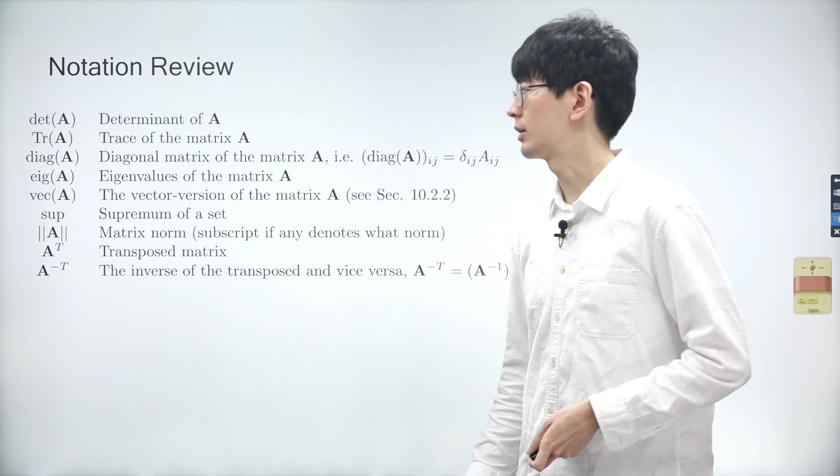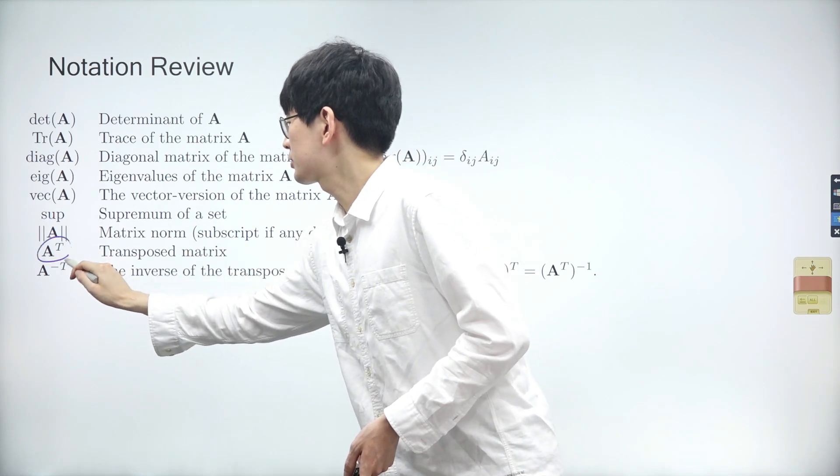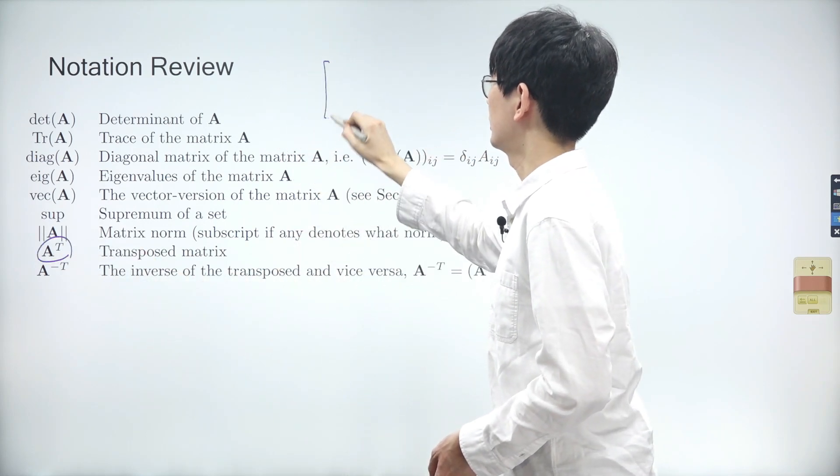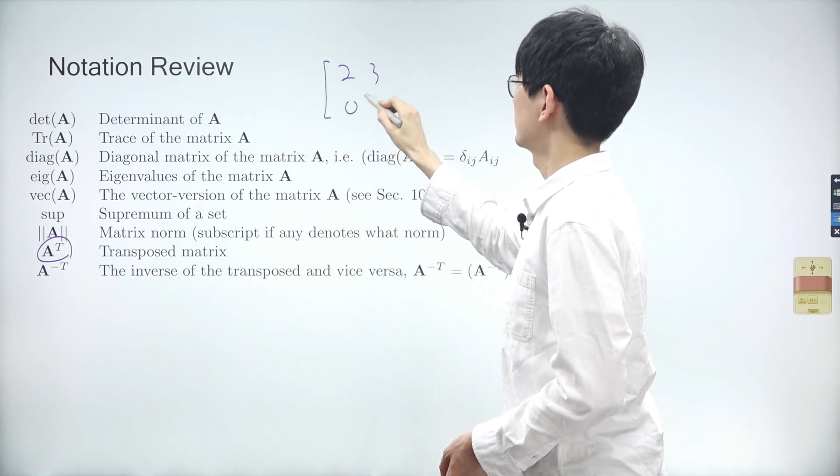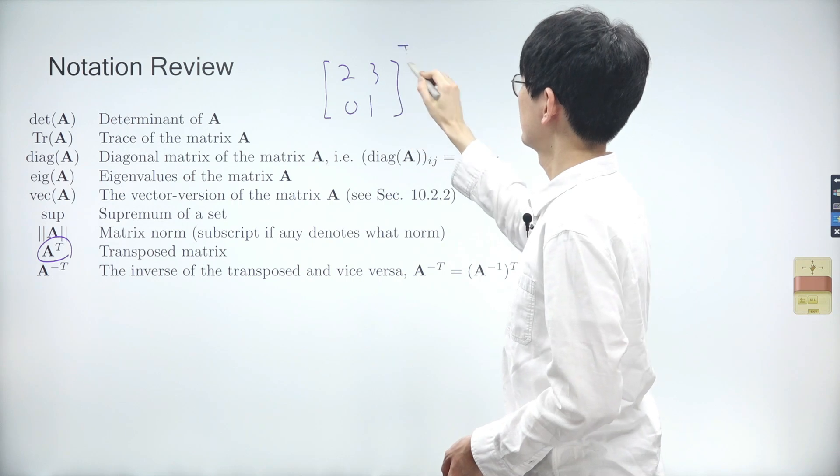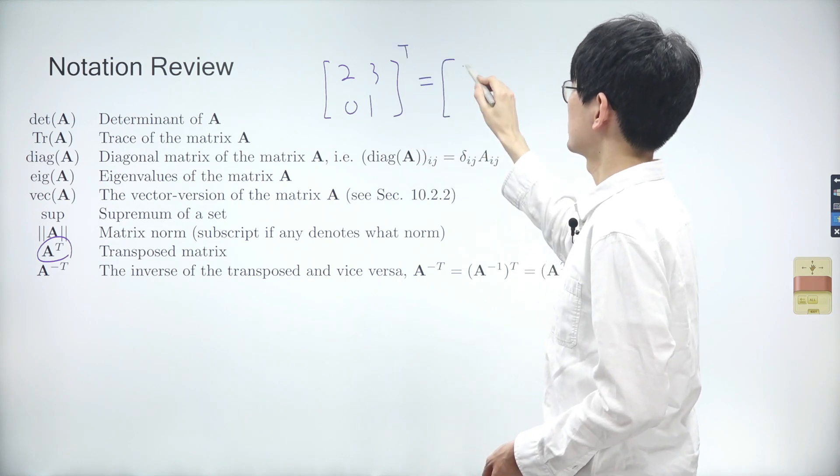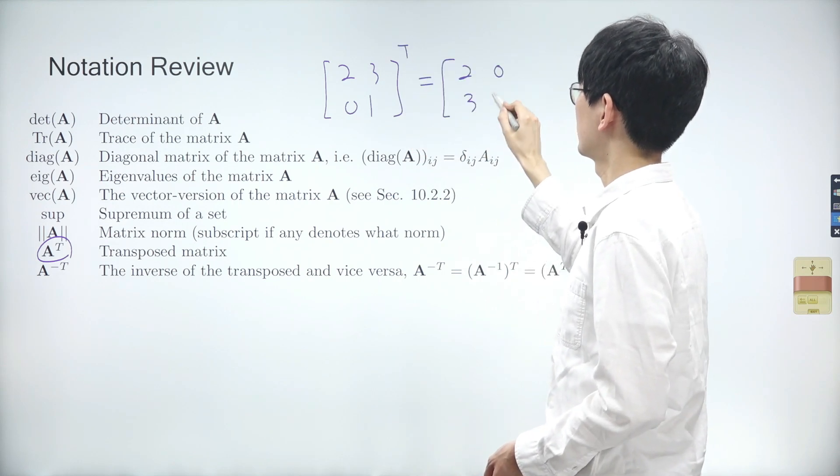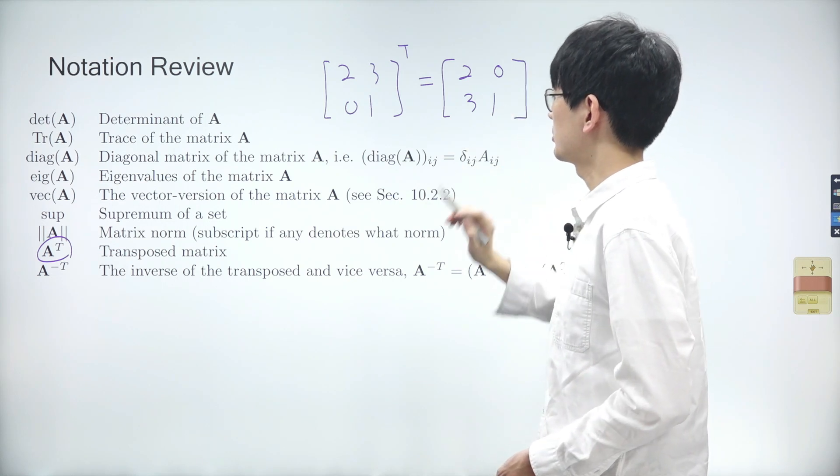As we discussed in the previous lecture, a transpose matrix is obtained by swapping the rows and columns of the original matrix. Thus, the transpose of a matrix 2, 3, 0, and 1 is a matrix 2, 0, 3, and 1.